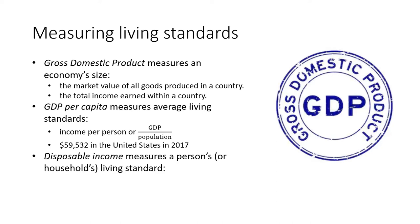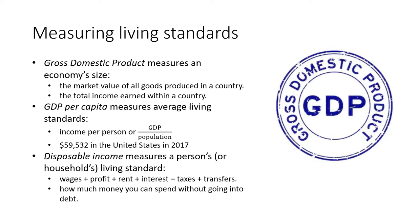Disposable income measures a person's or a household's living standard. We calculate it by adding up household wages, plus any profit they earn, plus any rent they earn on extra properties, plus interest earned on savings in a bank, minus the taxes they pay, plus dollar transfers they get from government — perhaps in the form of Social Security. You can think of disposable income as how much money you can spend without going into debt.